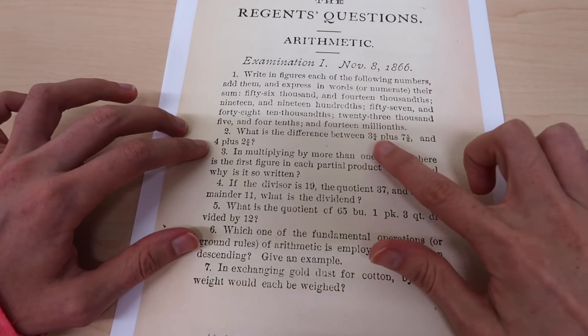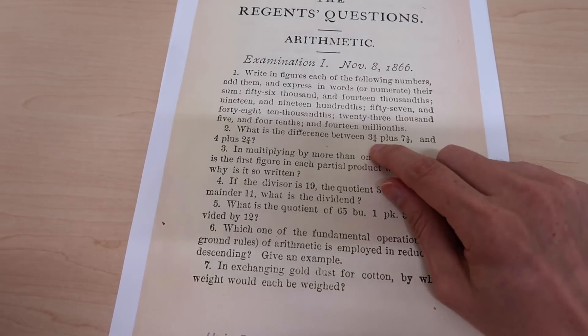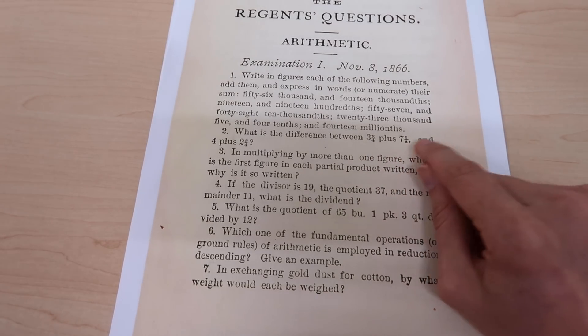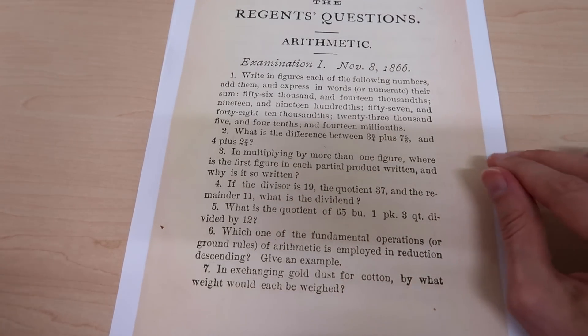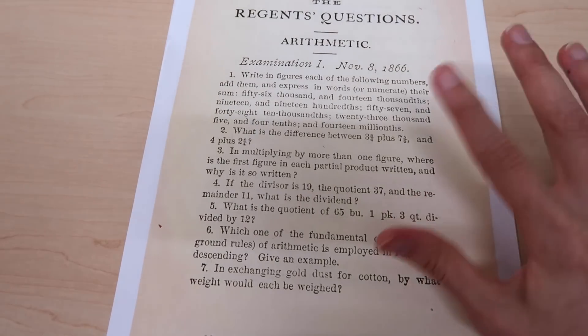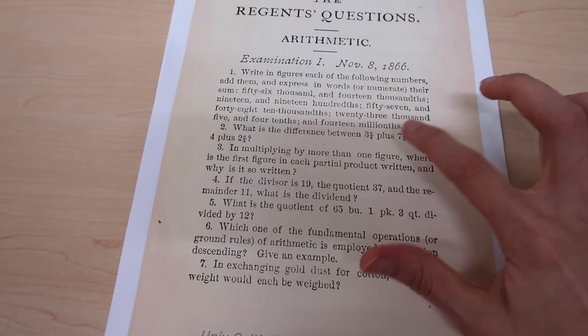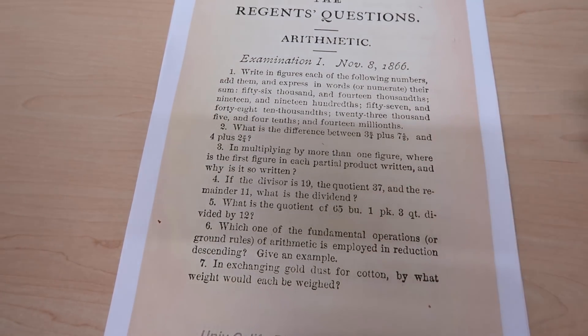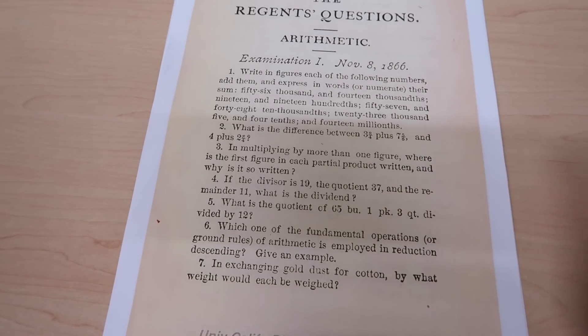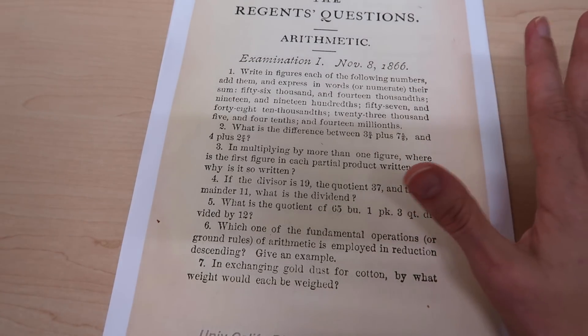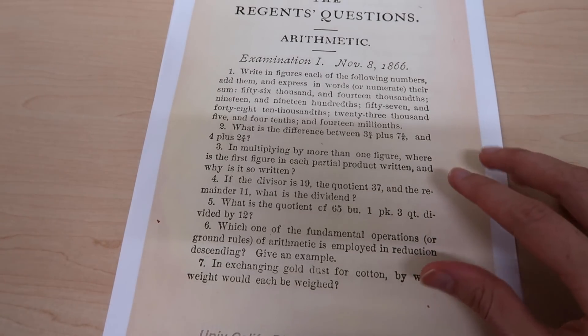Number two: what is the difference between three and eight quarters plus seven and five eighths and four plus two and eight quarters? So this is a fractions problem. We've got some mixed fractions here. I think you need to add some fractions essentially, and to do that you'll need to convert them to have a common denominator, so getting out of mixed fractions into improper ones.